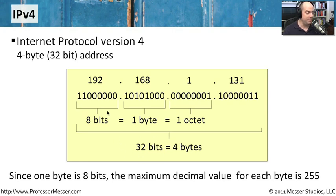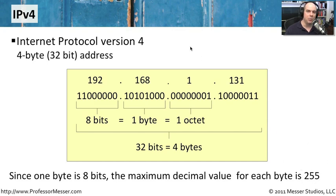If each octet is eight bits long and all bits were set to one, the maximum number for any section of a dotted decimal IPv4 address is 255. That's how we type IP addresses into our systems and firewalls, and how we decide which subnets people can access — typically based on these IPv4 addresses.